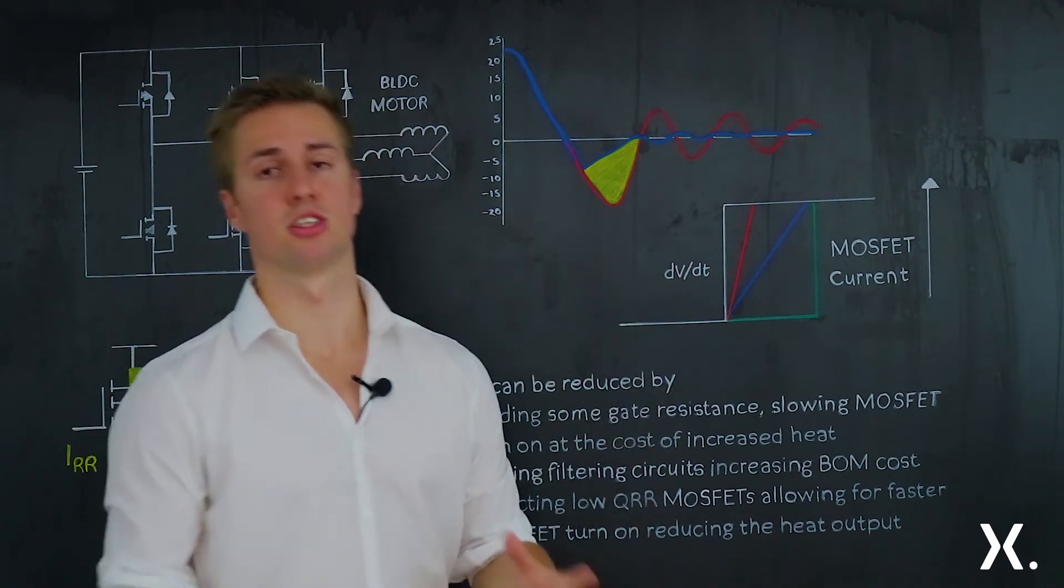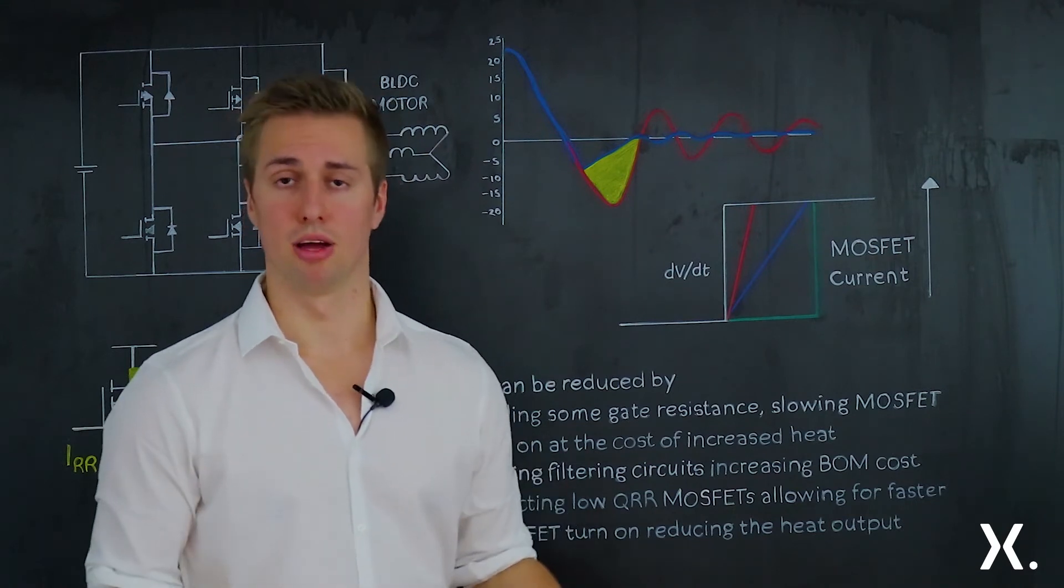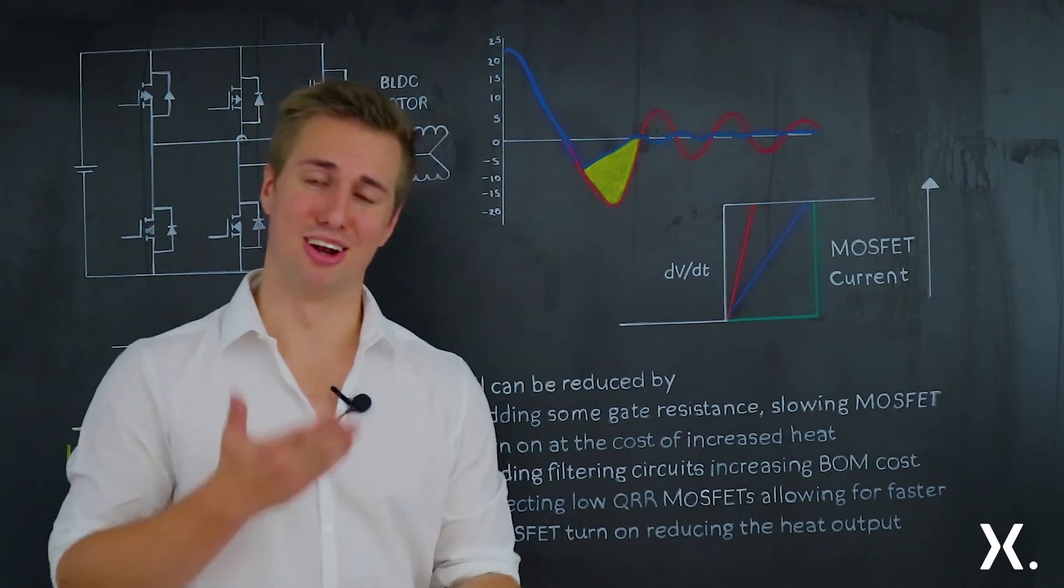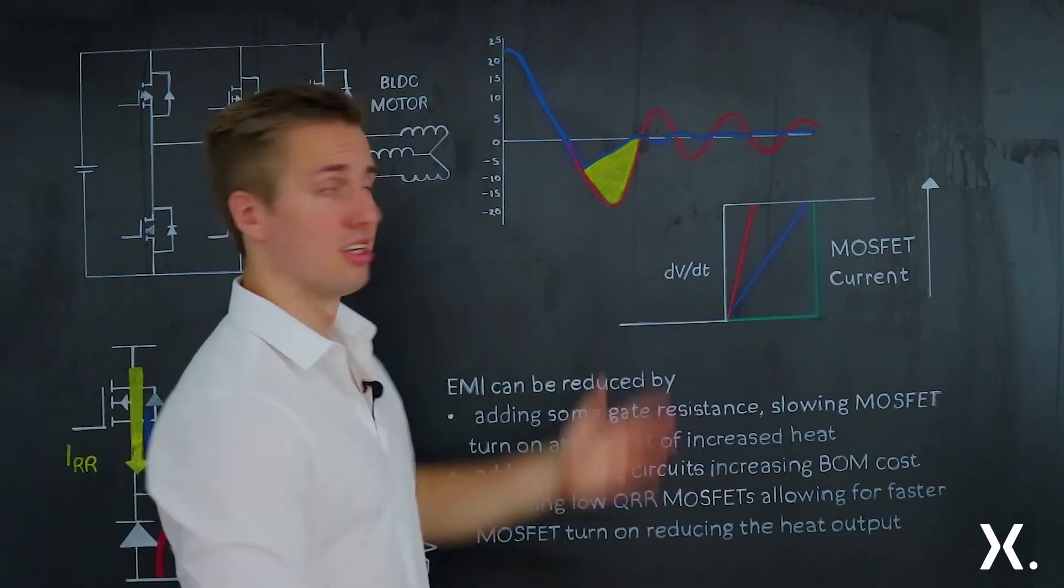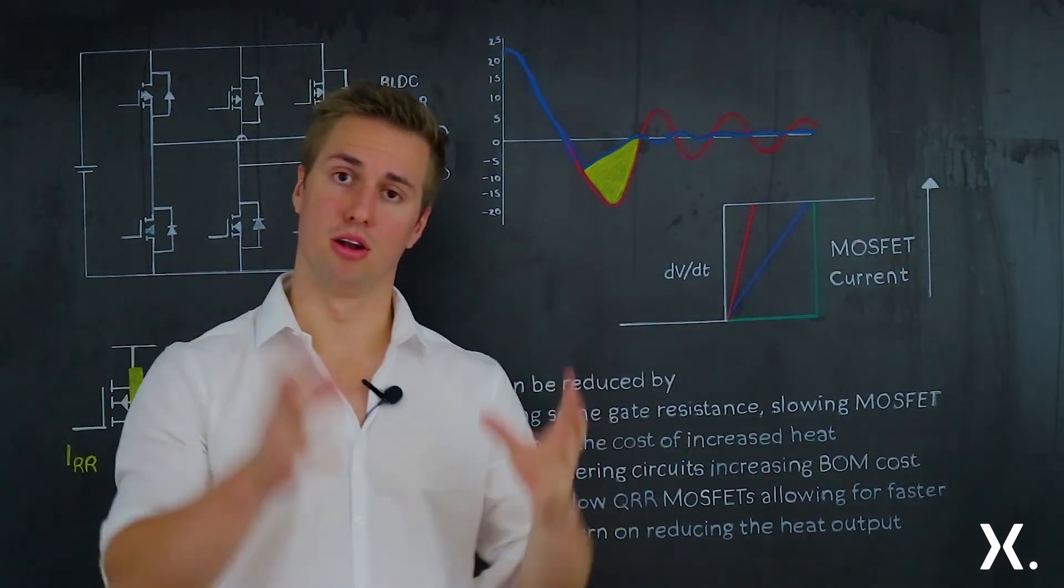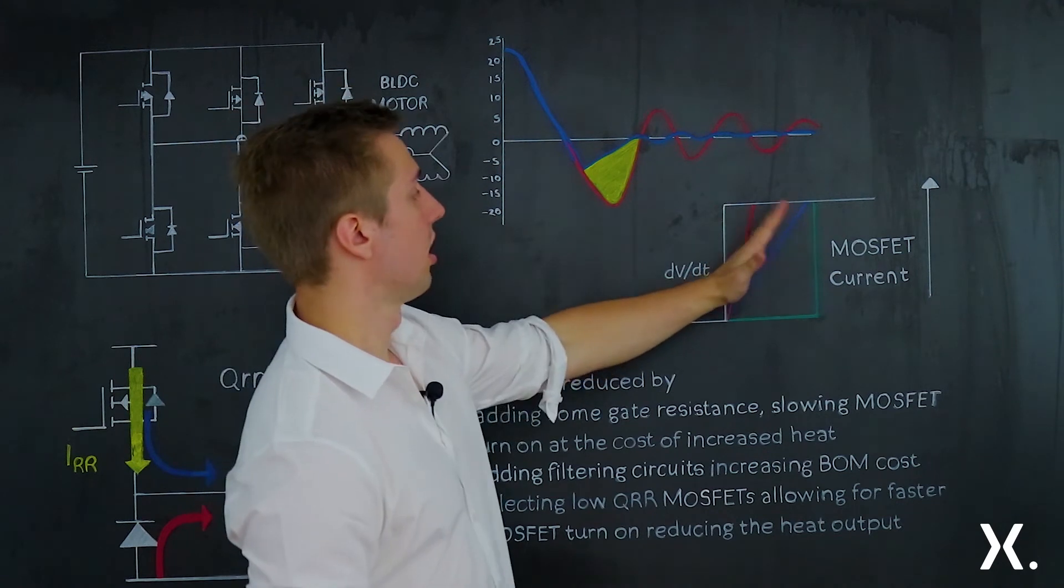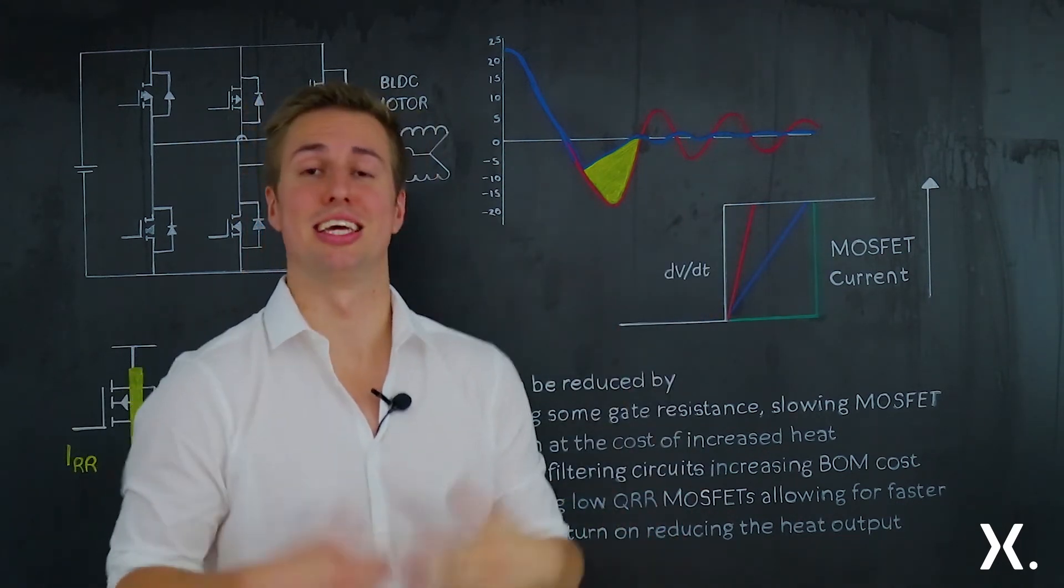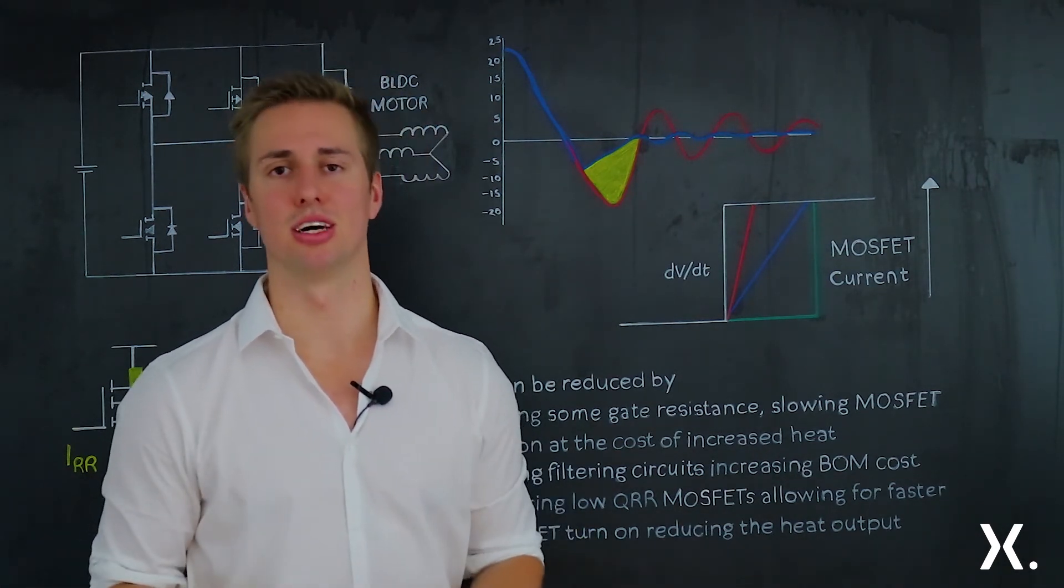And that's why picking a low QRR MOSFET, which does lower EMC to a certain degree, also allows you to have a slightly sharper rising edge, which also reduces the heat output. Not by adding any extra components, just by picking a lower QRR device.